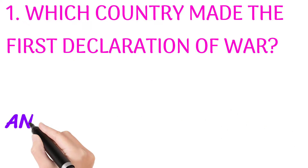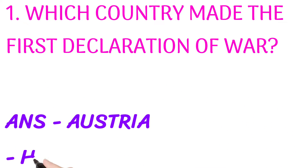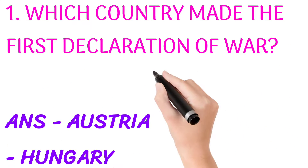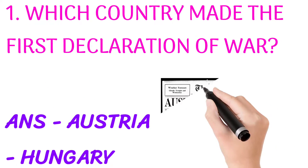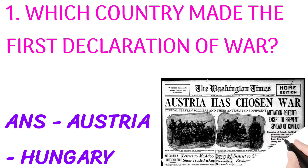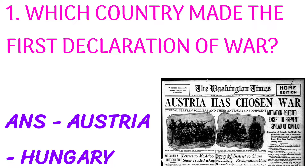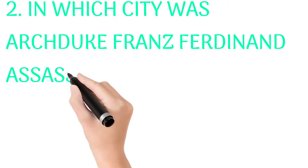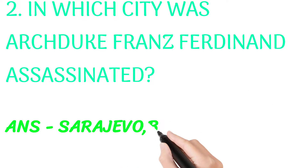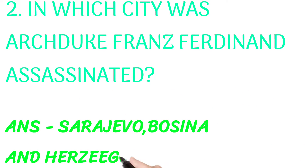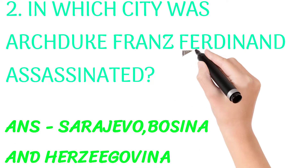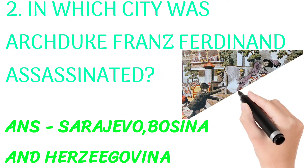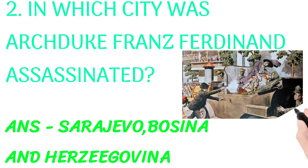Which country made the first declaration of war? Answer: Austria-Hungary. In which city was Archduke Franz Ferdinand assassinated? Answer: Sarajevo, Bosnia and Herzegovina.